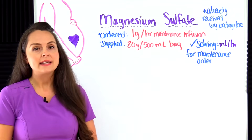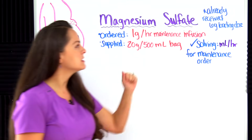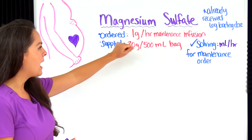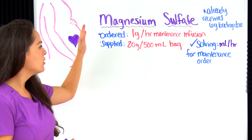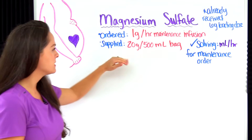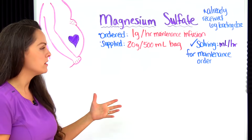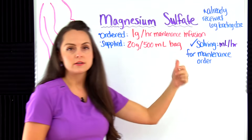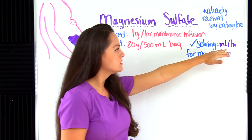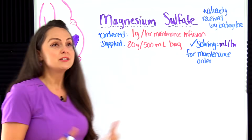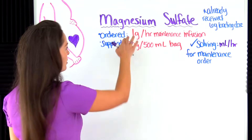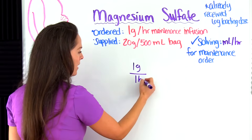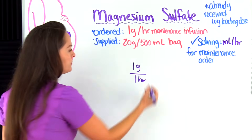The next problem says we have a patient who is 29 weeks pregnant with eclampsia. The patient has already received a six gram loading dose of magnesium sulfate, and now the healthcare provider has ordered a one gram per hour maintenance infusion. You're supplied with a bag of magnesium that reads 20 grams per 500 mL, and you need to solve for the maintenance dose infusion rate in milliliters per hour.